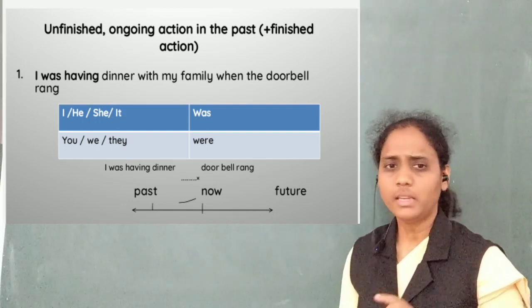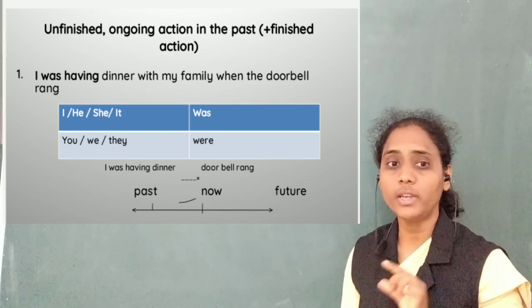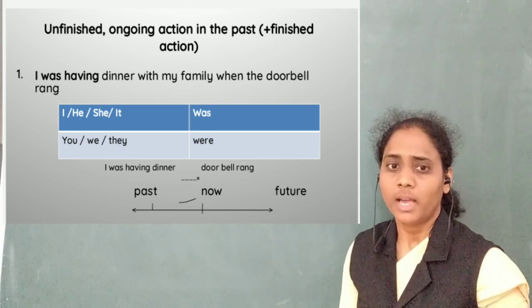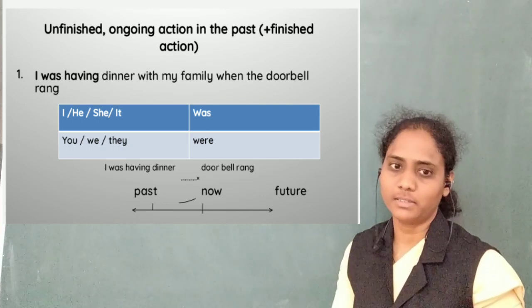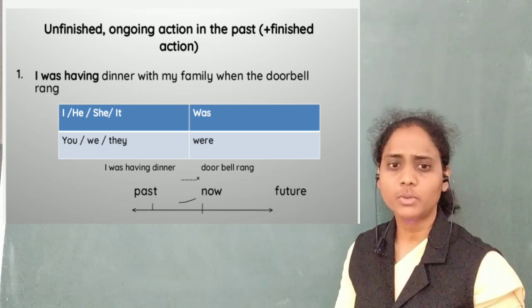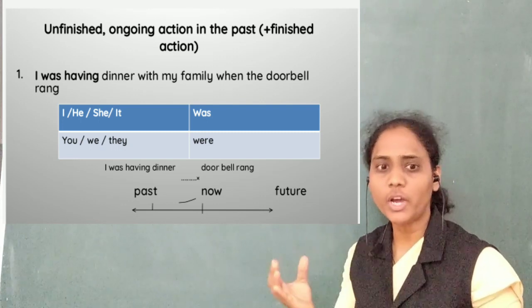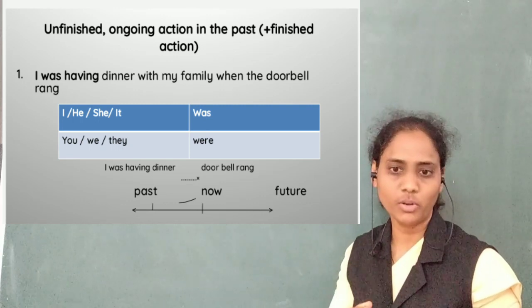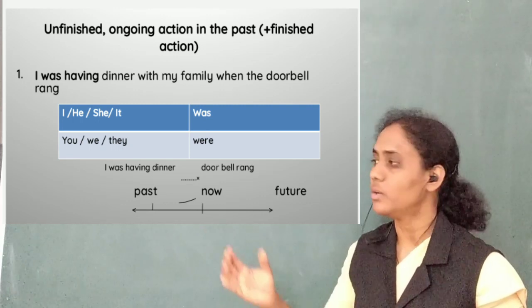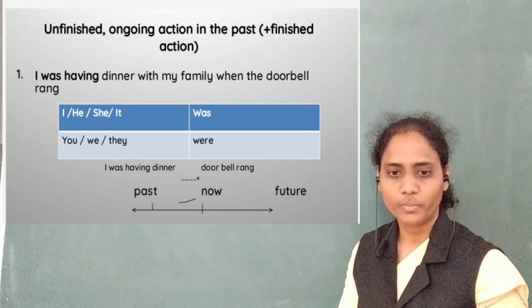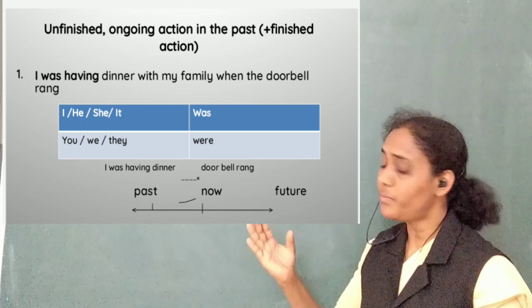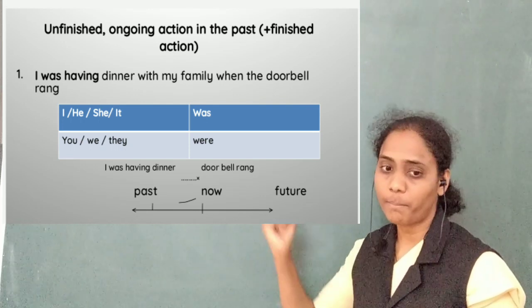The doorbell rang. So this shows an unfinished, ongoing action in the past. I was in the middle of having dinner and something happened — the doorbell rang. So I had to put down my spoon and fork, get up from my table, and go see who it was. The past continuous talks about an unfinished action in the past.